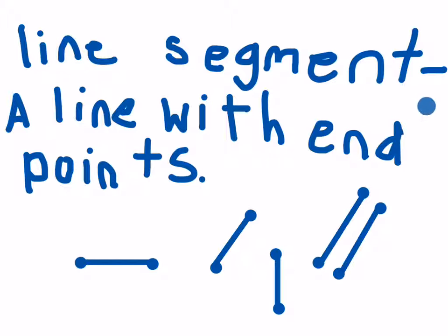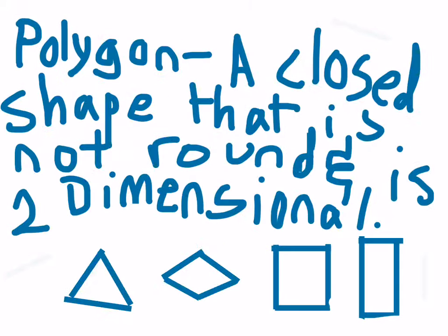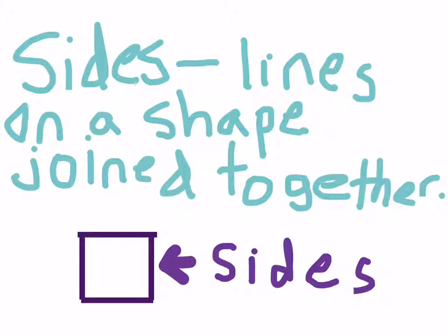The meaning of line segment is a line with end points. Polygon is a closed shape that is not round and is two-dimensional. Side means lines on a shape joined together.